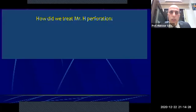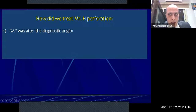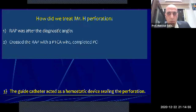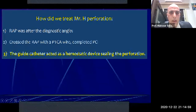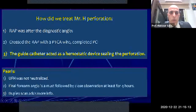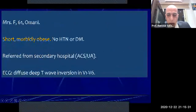At the end of the procedure, we injected contrast and found the radial artery perforation had completely sealed. The key lesson: when perforation occurs after diagnostic coronary angiography, don't make a decision to cross over to another route. Insist on going through the same perforated radial artery — cross it meticulously with the PTCA wire and complete your PCI. The guiding or diagnostic catheter will act as a hemostatic device sealing the perforation in the vast majority of patients. Final forearm angiography is a must, and duplex scan provides additional information.